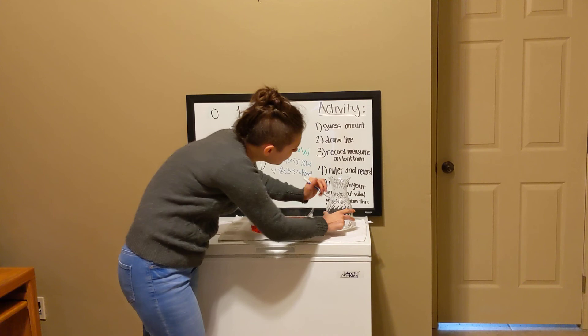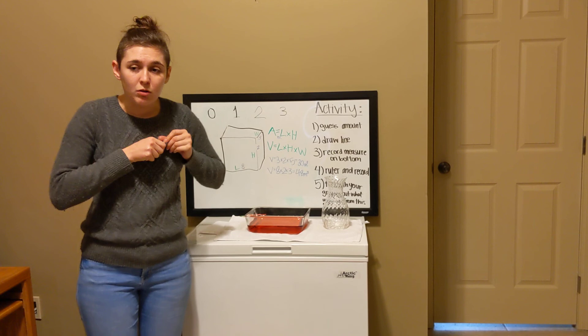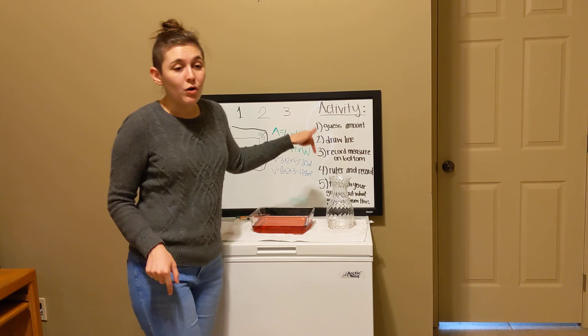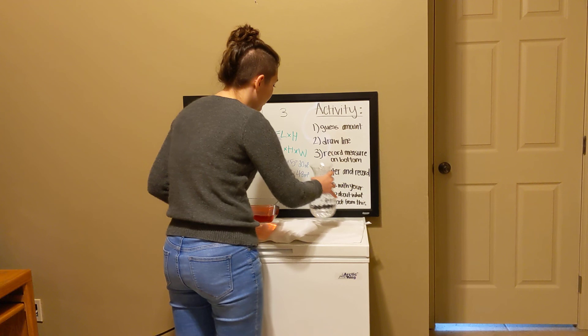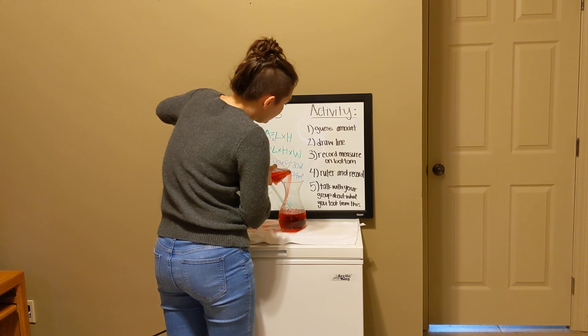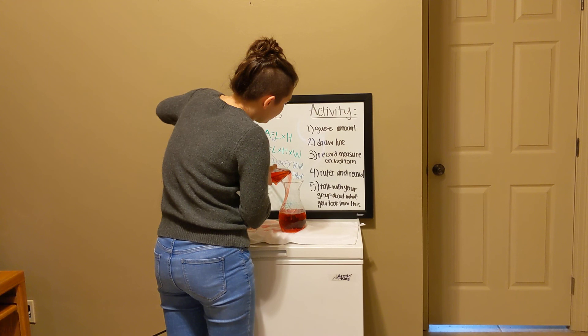Use an expo marker and draw a line where you think the water will come up to when you pour it all in. You can put your initials on there. Then carefully — you'll have crawfish trays, so at least if you're going to spill, keep it in the crawfish tray — you're going to dump all the water back in there and see if you can figure it out, then brag to your group members about who got the closest.